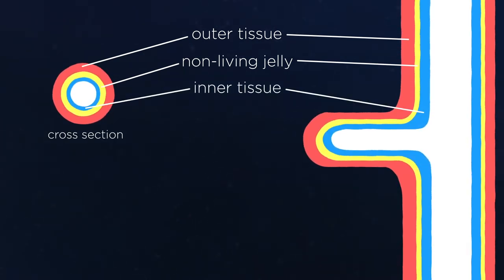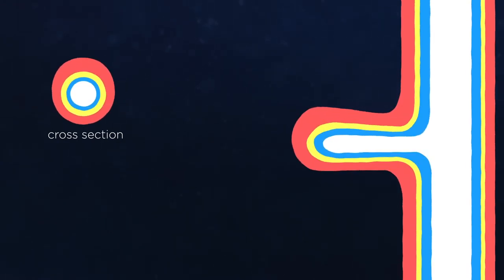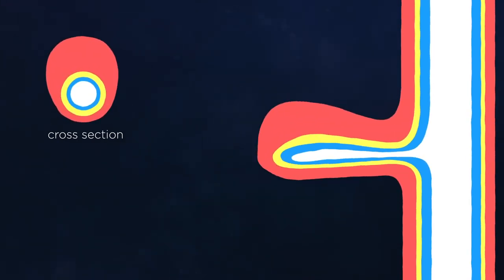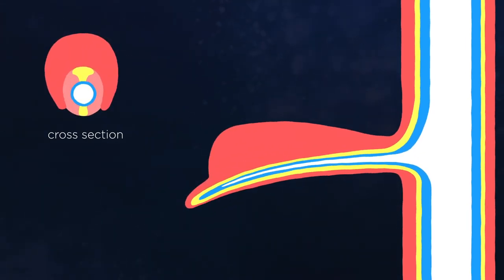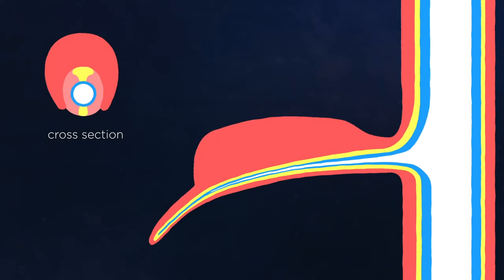However, as tentilla develop, the three body plan layers start separating. The outer layer swells up, the jelly condenses and hardens into a collagen wire, and the inner layer tube provides a nourishing connection from the tentacle to the distal end.